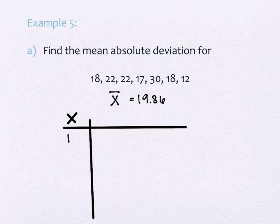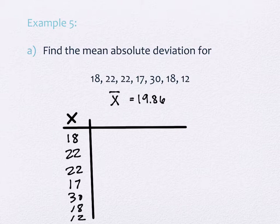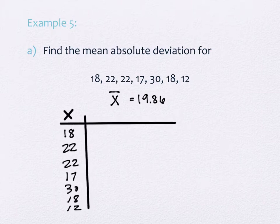But I'm going to take all of my x values that I had and put them in this column. So I have 18, 22, 22, 17, 30, 18, and 12. We have all these different values, and what we want to do is we want the absolute value between that x value and the mean. I want to know how far away it is from the mean. In other words, how far is 18 away from 19.86? So some of these you might just be able to do off the top of your head. Others you might want to use your calculator to do the subtraction. But you don't care what the sign is. It doesn't matter what the sign is.